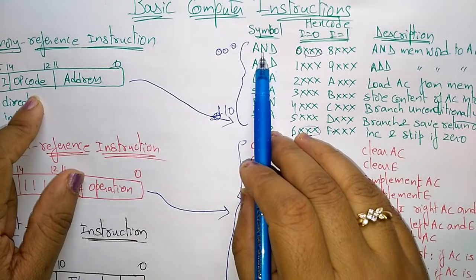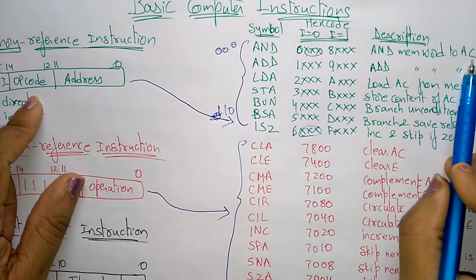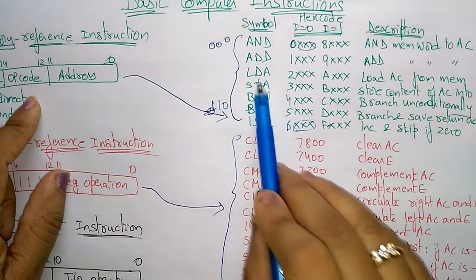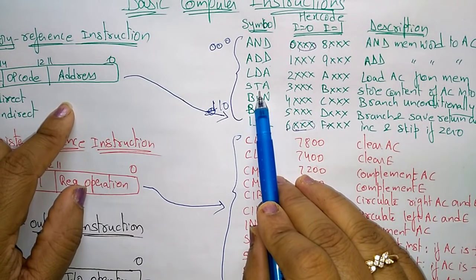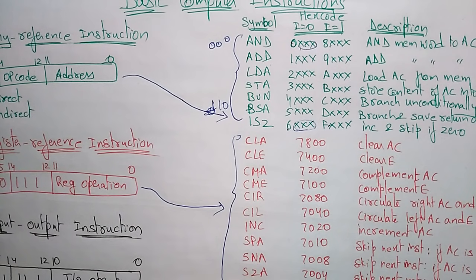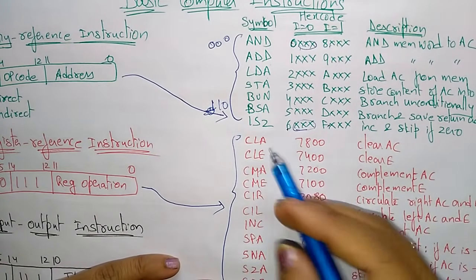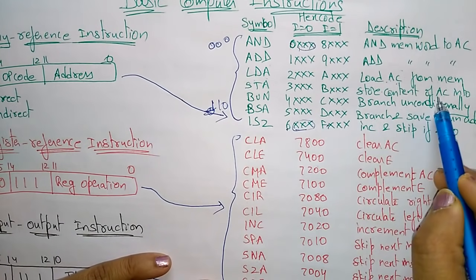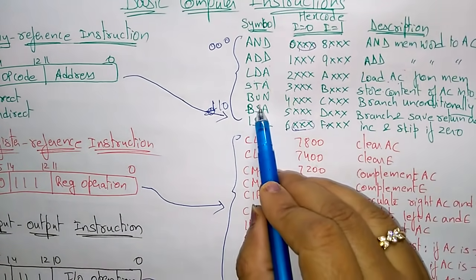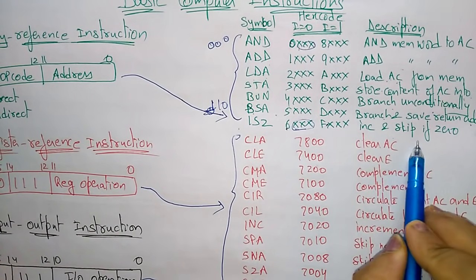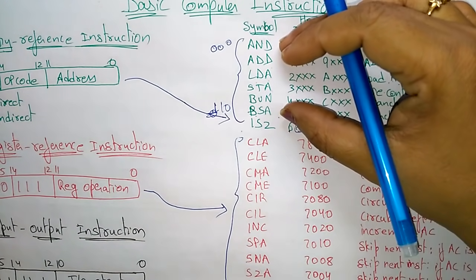The memory reference instructions are: AND — AND memory word to accumulator; ADD — add to accumulator; LDA — load accumulator from memory; STA — store content of accumulator into memory. The accumulator is a register in the processor that holds the result of an operation. BUN — branch unconditional; BSA — branch and save return address; ISZ — increment and skip if zero.